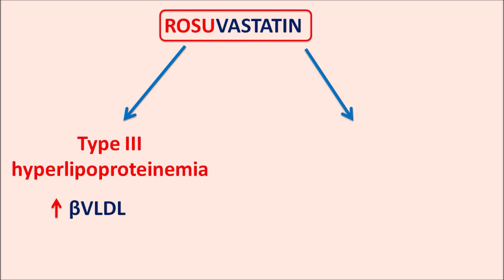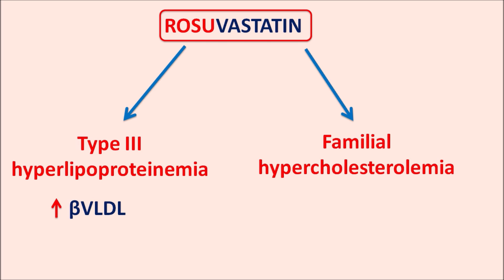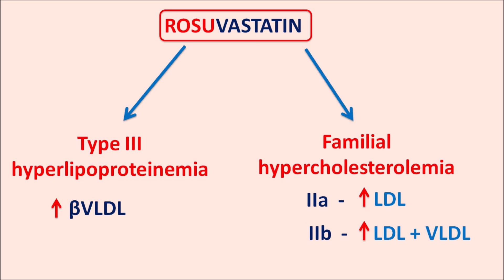This drug can also be used in familial hypercholesterolemia, which is classified into two types: type 2A, where there are increased LDL levels, and type 2B, where both LDL and VLDL levels are elevated. In both conditions, rosuvastatin can be used. It can thus be used in hypercholesterolemia as well as mixed dyslipidemia, reducing lipoprotein levels and thereby reducing the risk of atherosclerosis and related cardiovascular complications such as stroke and myocardial infarction.